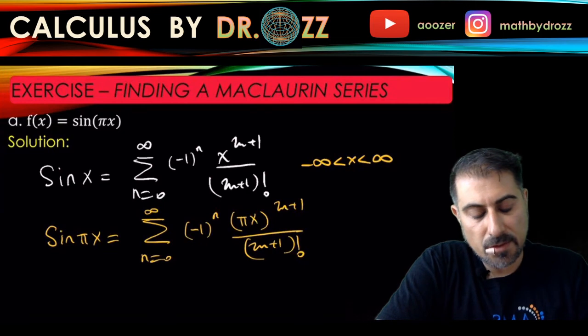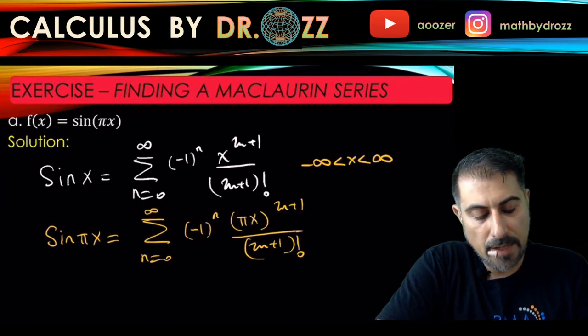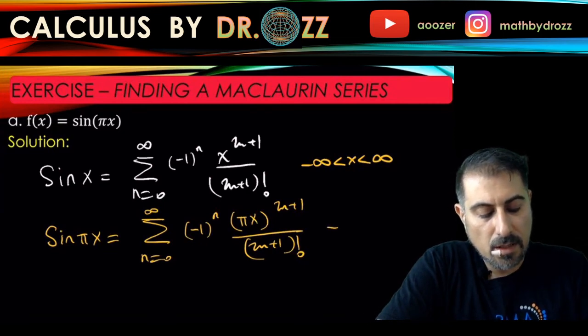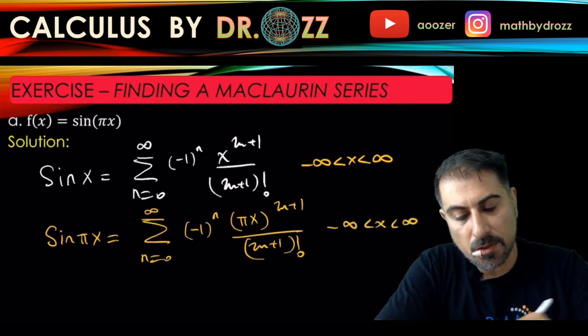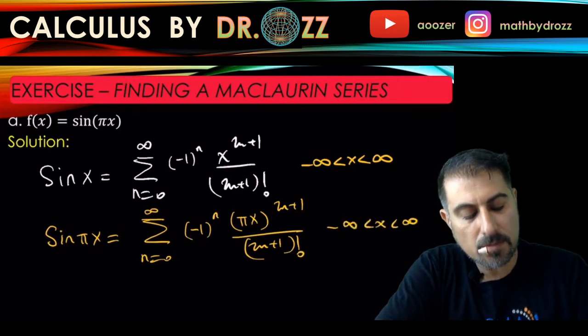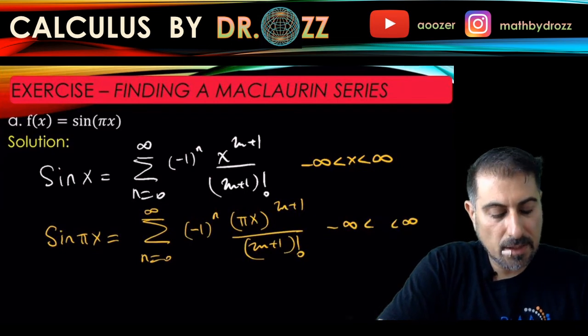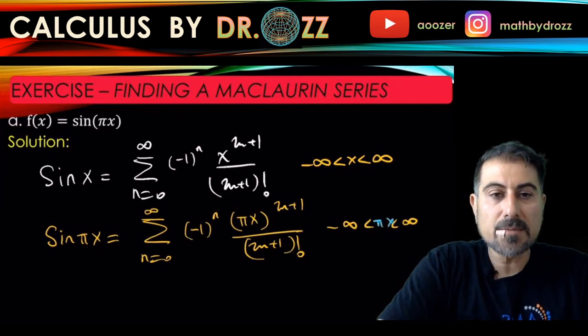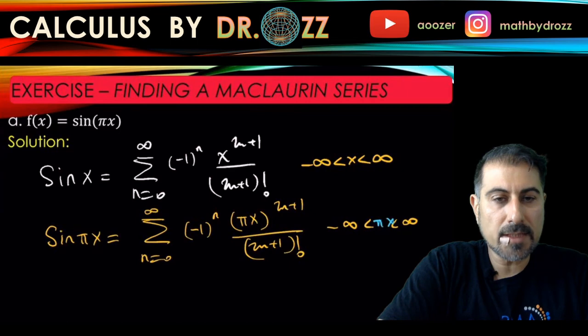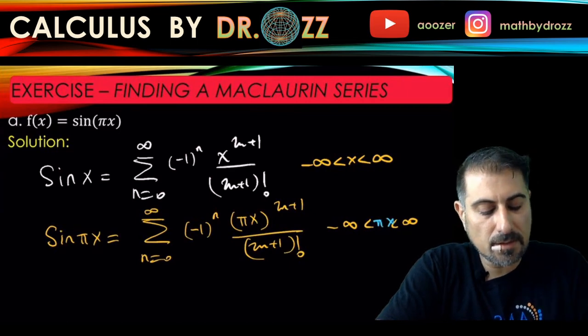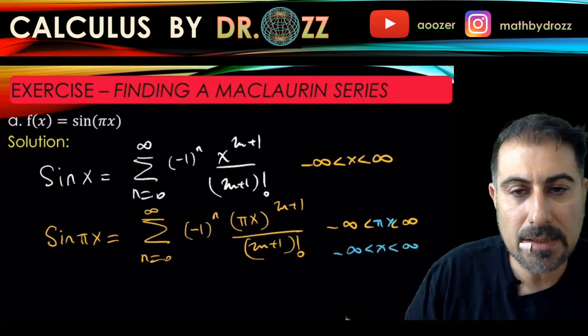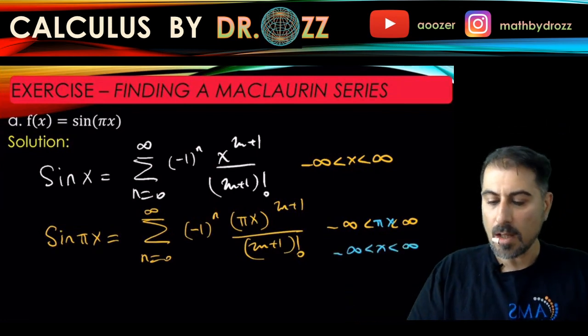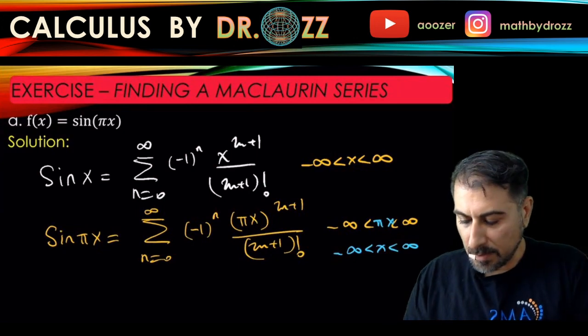Okay. So here since we didn't change much about x, what we do here is just to put pi x here. Okay, because we replaced x by pi x and divide both sides by pi. But that still yields minus infinity and infinity because minus infinity divided by pi is just still minus infinity. Okay. This takes care of part A.